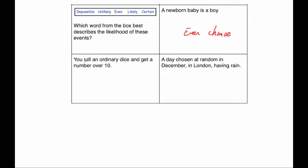You roll an ordinary dice, so that's 1 to 6 and you get a number over 10. Well an ordinary dice only goes up to 6, so that's going to be impossible.